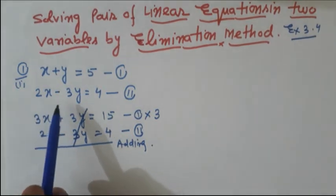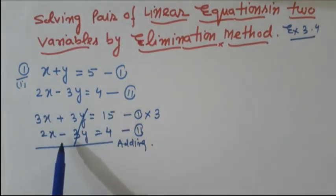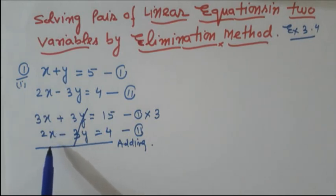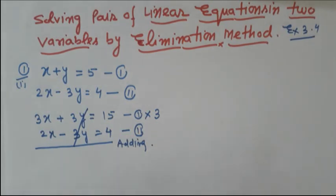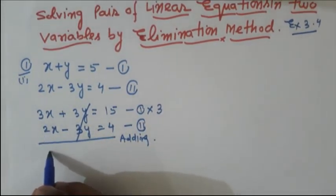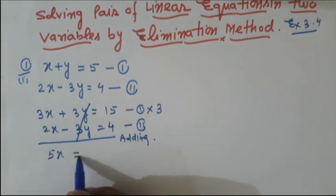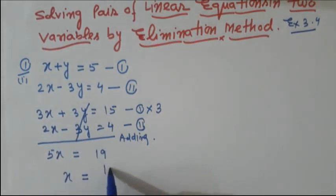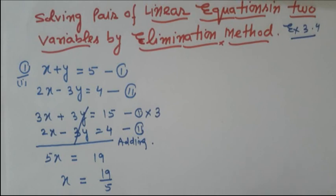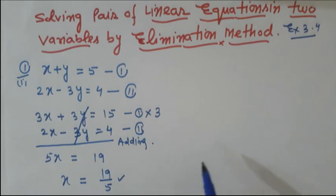If the signs were both positive (plus 3y and plus 3y), they would not cancel. In that case we would change the sign of one equation and write 'subtracting'. But here the signs are already different, so we add. Adding gives 3x plus 2x = 5x, and 15 plus 4 = 19. Therefore x is equal to 19 upon 5.